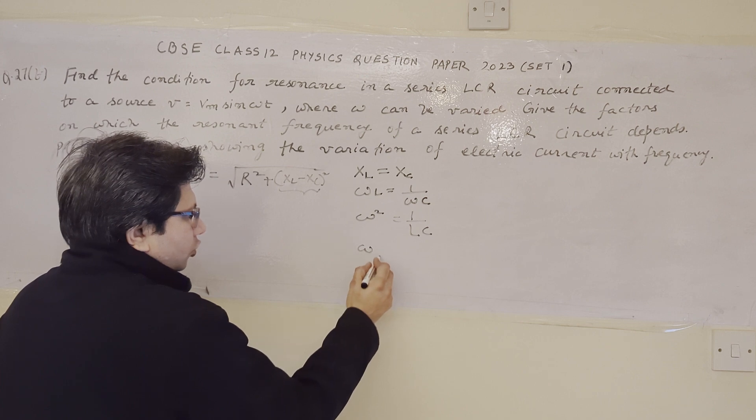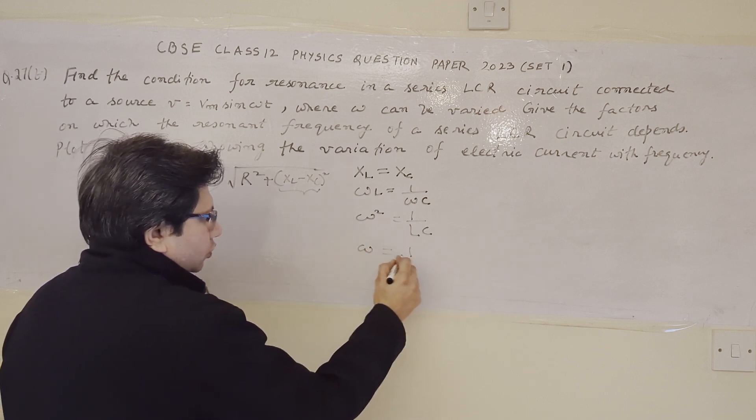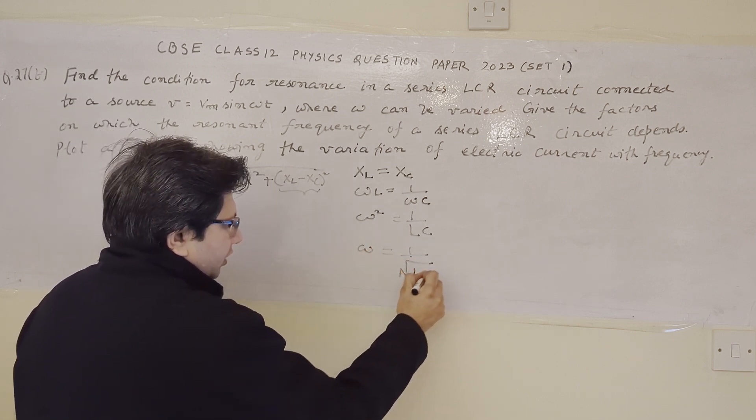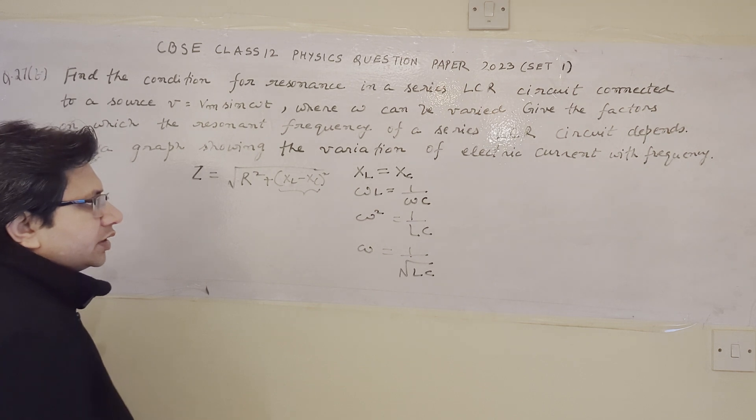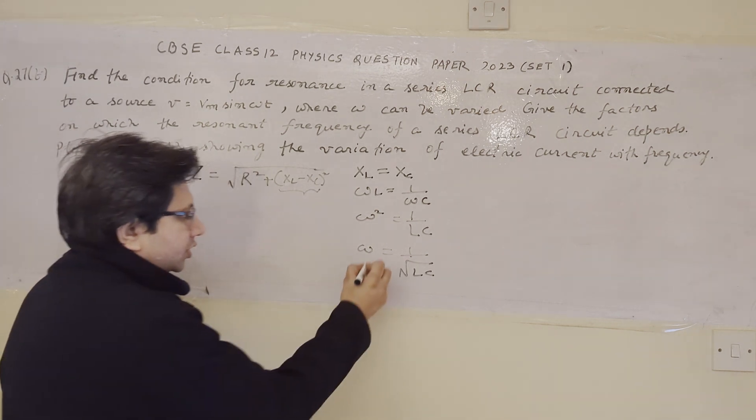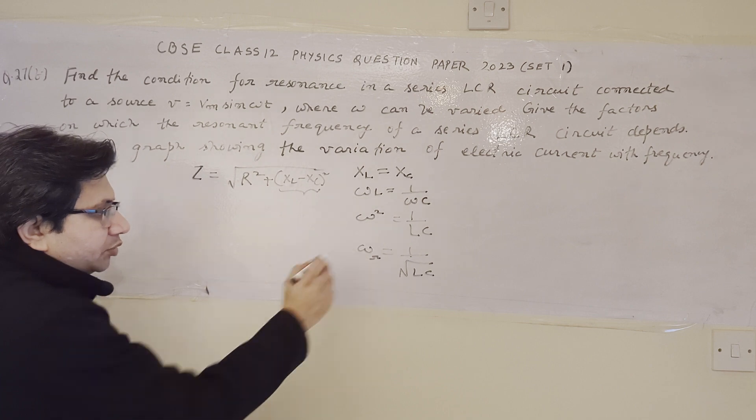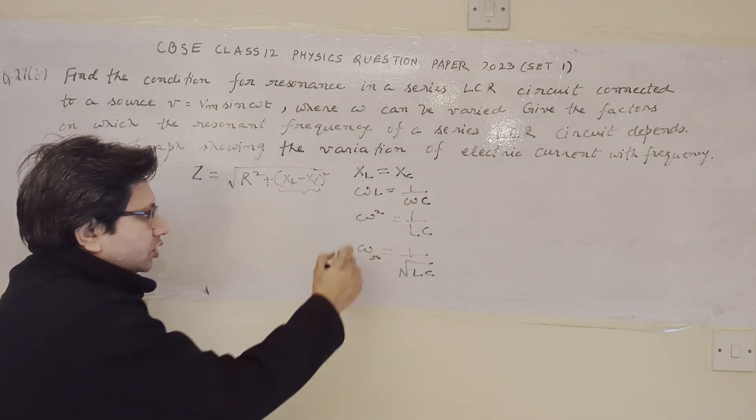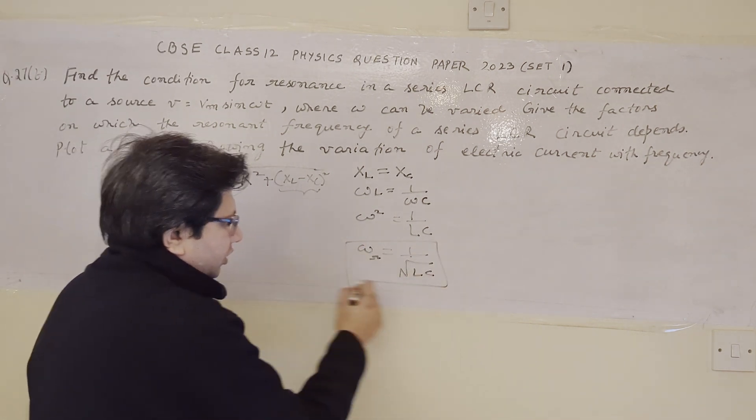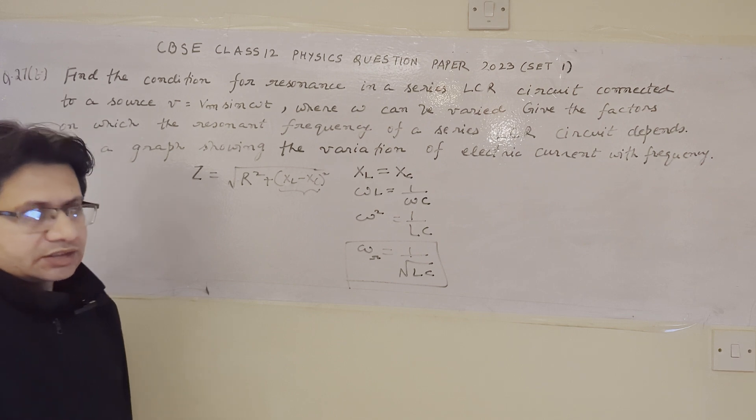So, we can say that omega is equal to 1 upon square root of LC. So, this is the condition of resonance. That is why this omega, this radians per second frequency is also called as omega subscript R, omega sub R. So, this is the condition of the resonance in a series LCR circuit.